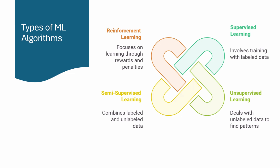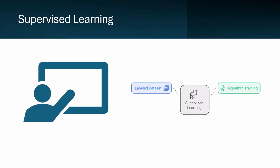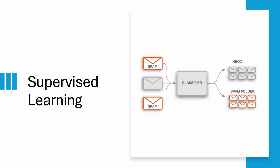Let's begin with supervised learning. This approach is akin to having a teacher guide a student through a lesson. In supervised learning, the algorithm is trained on a labeled dataset, meaning that each input comes with a corresponding output. For example, consider an email classification system — the algorithm learns to distinguish between spam and legitimate emails.